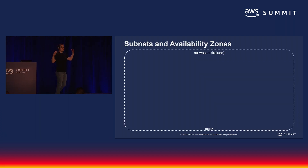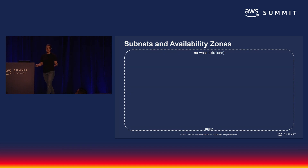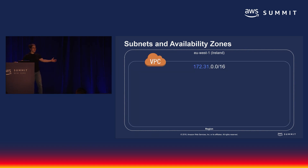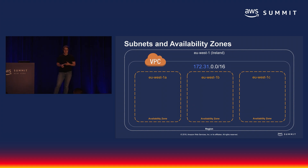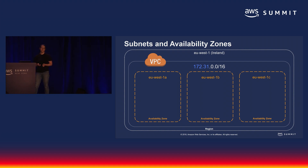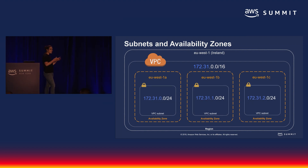Each region is divided up into two or more availability zones, and each availability zone is made up of one or more data centers that have redundant networking and redundant power — completely separate failure characteristics. So if something happens in one, you've got redundant setup in other availability zones. When you create a subnet, your subnet is a subnetwork of your VPC within an availability zone.